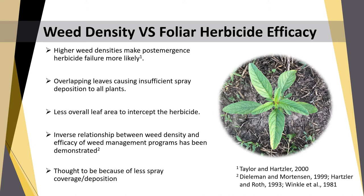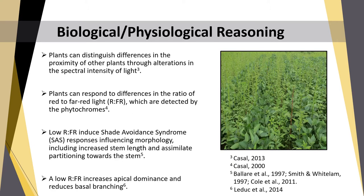Plants that normally grow in unshaded or lightly shaded habitats can distinguish differences in the proximity of other plants through alterations in the spectral intensity of light. They can respond to differences in the ratio of red to far-red light, detecting them with a family of plant photoreceptors called the phytochromes. A low red to far-red ratio induces what is called shade avoidance syndrome — responses that occur at the plant level and influence whole plant morphology, including increased stem length and assimilate partitioning towards the stem instead of leaves and branches.